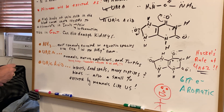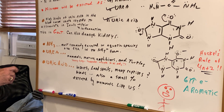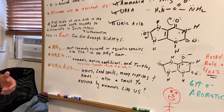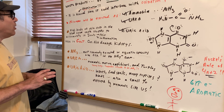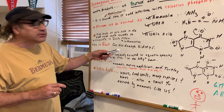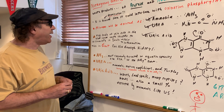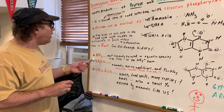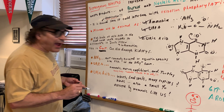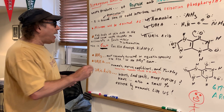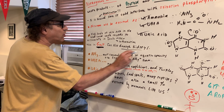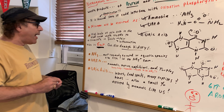High levels of uric acid in the blood — always a good question — could cause crystals of urate to accumulate in joints, which can cause pain and inflammation. The disease would be called gout. Uric acid crystals can also cause kidney damage.